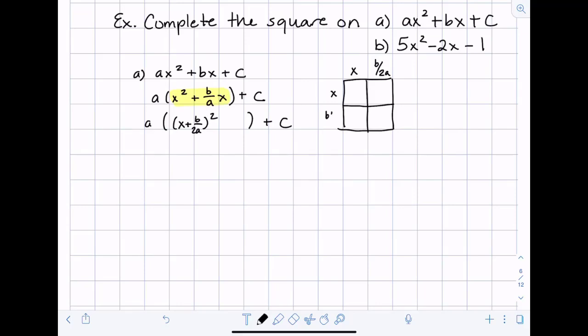Okay so I've got x and I've got b over 2a. Now this little box is how I like to visually demonstrate the distribution process which a lot of people like to use foil and that's okay too. So x times x is x squared. x times b over 2a is b over 2ax. I'm keeping it the same. b over 2ax and then b times b is b squared. 2a times 2a is 4a squared. Okay so let's take a look at what we get when we actually add these together.